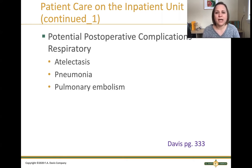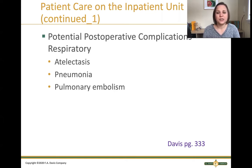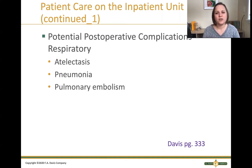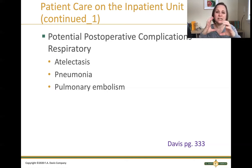Another concern is pulmonary embolisms — clots that can form in or travel to the lungs. Patients are usually on some kind of prophylactic medication or sequential compression devices (SCDs) to help prevent blood clots in the legs that can then travel to the lungs. You'll want to know what you're doing to prevent clotting for this patient — whether giving subcutaneous heparin daily or using SCDs that squeeze the patient's legs to keep blood flow circulating and prevent embolisms.